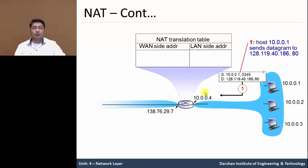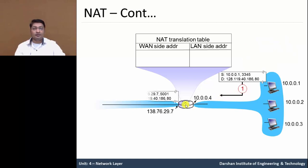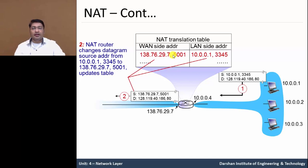It sends a datagram to the machine with that IP address on the internet. The source and destination addresses are set. As the packet travels through the router, the routing table entry changes the source address to 138.76.29.7, while the destination address remains 128.119.40.186. The source is changed because the packet is coming from this port to the destination. The WAN-side entry in the NAT table is updated, and the LAN-side entry holds the original host address.